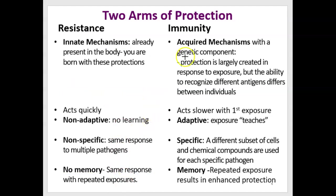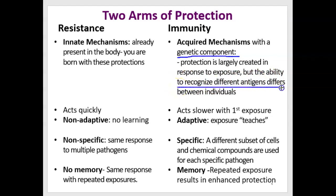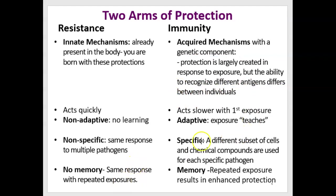That's very different from immunity. Immunity is acquired. There is a genetic component — we are born with genes that code for specific antibodies and specific types of T-cells, which are types of lymphocytes. But those genes can be rearranged with exposure, so protection is largely created in response to exposure. The ability to recognize different antigens will differ between individuals based on what they've been exposed to as well as their genetic component.